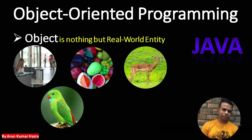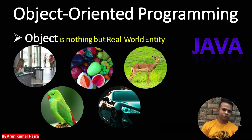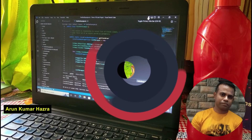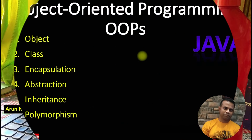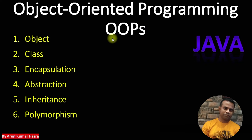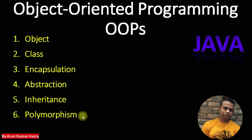It can be birds, it can be cars, or anything that exists in the real world. All these entities we can call as an object. Today we will learn object oriented programming, or OOP concepts. OOP is basically based on these six concepts: Object, Class, Encapsulation, Abstraction, Inheritance, and Polymorphism. So today we will learn all these six concepts with some real world examples.